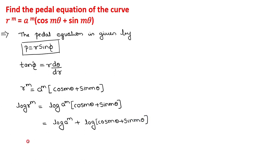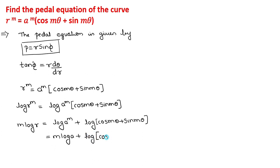On the left-hand side, log(R^M) = M log R by the properties of log. Similarly, on the right-hand side, log(A^M) = M log A. So we have: M log R = M log A + log(cos Mθ + sin Mθ).